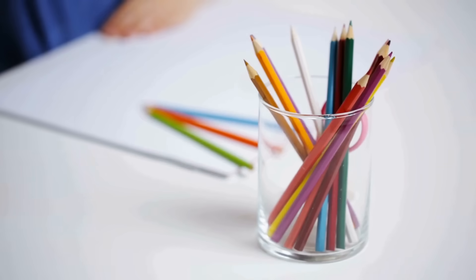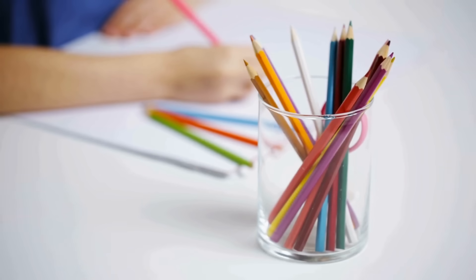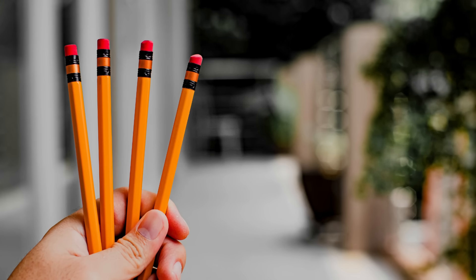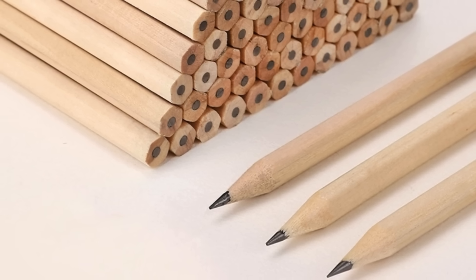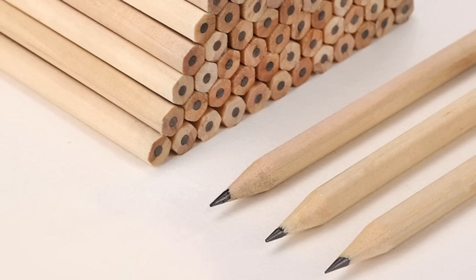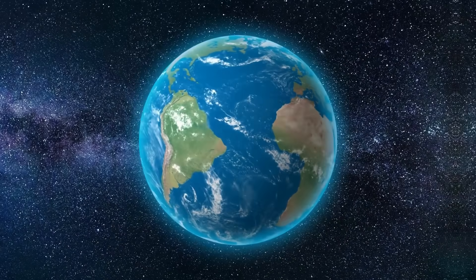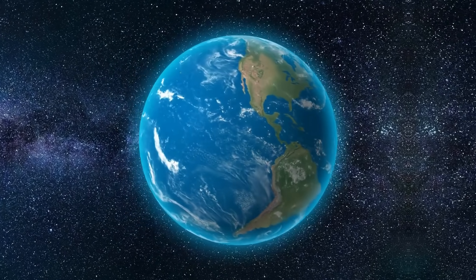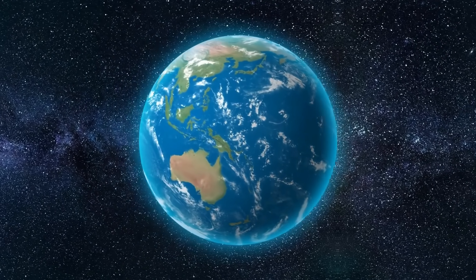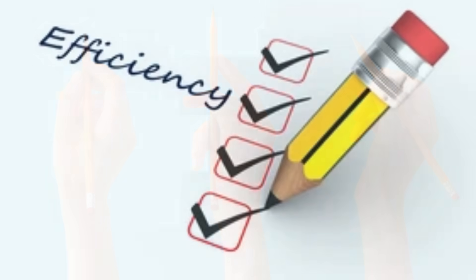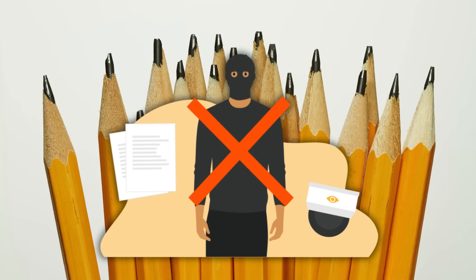It's something most of us never question. We just pick up a pencil and start writing or sketching. But if you dig into the history a bit, you'll find that this design isn't just about aesthetics or manufacturing convenience. The shape of the pencil, especially the hexagonal one, is the result of centuries of evolution, practical considerations, and a few very human needs like grip, efficiency, and even theft prevention.